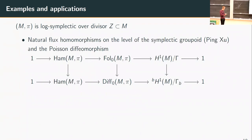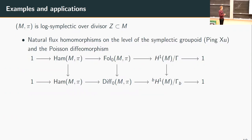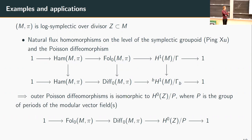Putting all these things together, we get interesting subgroups and Lie group structures on them. There are natural flux homomorphisms in this context on several levels — first on the level of the symplectic groupoid, which was already worked out by Pink-Su in the 1990s. There is a similar sequence for the Poisson diffeomorphism group, and from these sequences one can describe the outer Poisson diffeomorphisms. You get an exact sequence where the last piece is the group of periods of the modular vector field restricted to each component — something you would expect. Thank you for your attention.